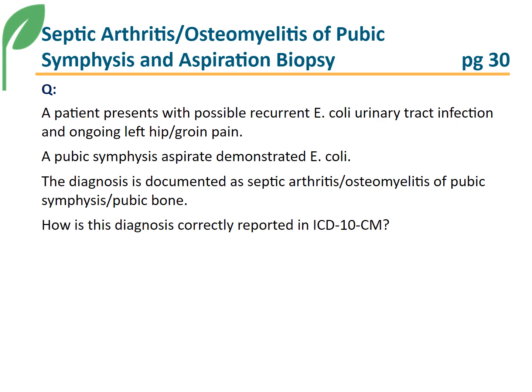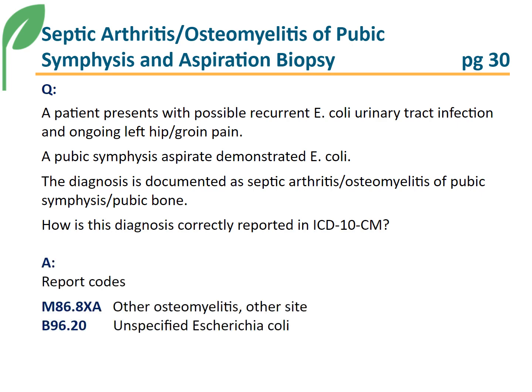Coding Clinic explains that currently ICD-10-CM does not have a specific code for septic arthritis of the pubic symphysis joint, and that the Centers for Disease Control and Prevention's National Center for Health Statistics has agreed to consider a future ICD-10 coordination and maintenance proposal to create a new code for septic arthritis affecting other joints.